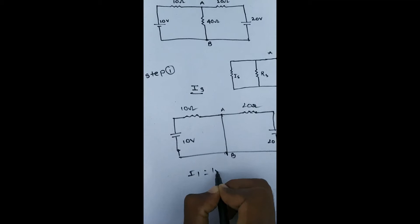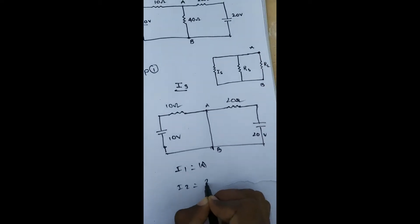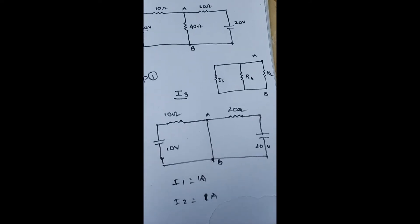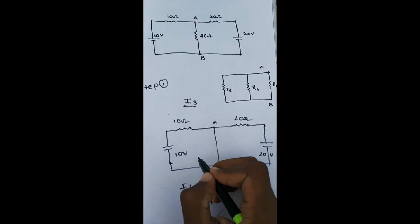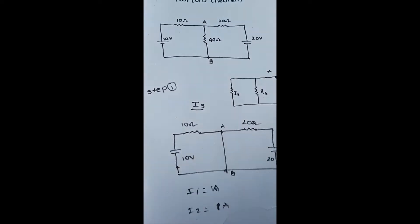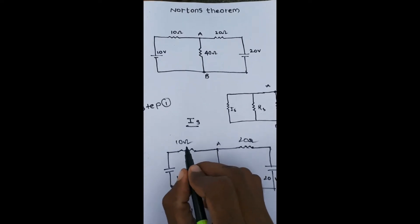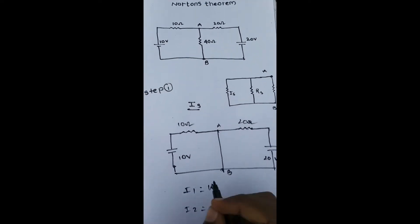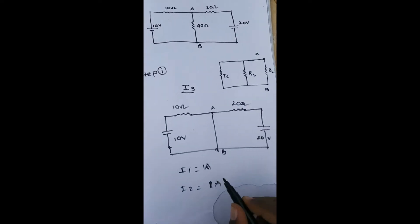By applying mesh analysis: i1 is equal to 1 amp. i2 is equal to minus 10 plus 10 minus 10 equal to minus 10. So minus minus cancel, i1 equal to 1 amp. Like that, i2 is also 1 amp.